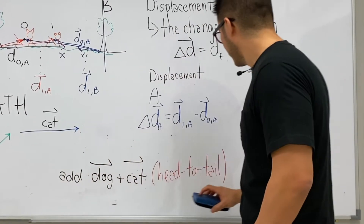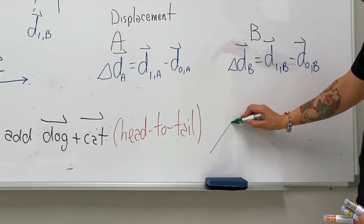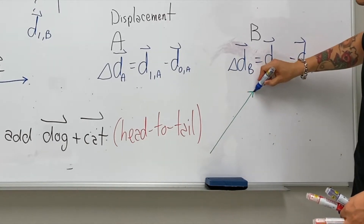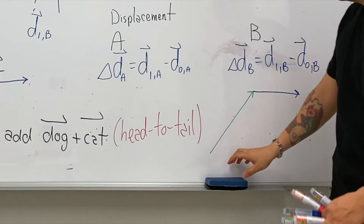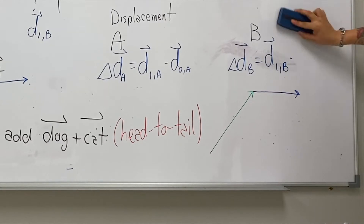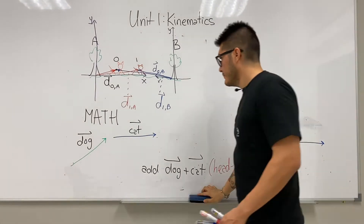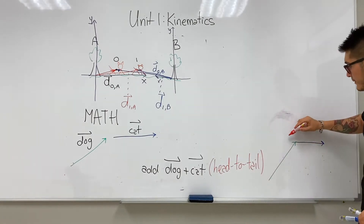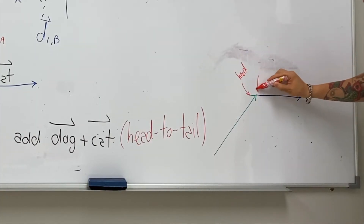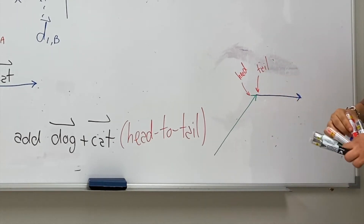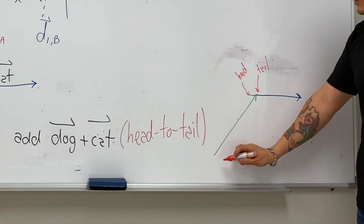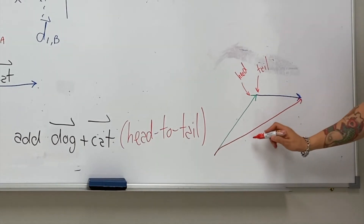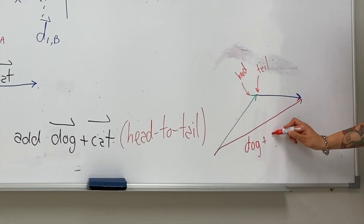Let's draw two vectors and attach them head to tail. We can move them such that the head of one vector connects to the tail of the second vector. When we do this, the resultant or the sum goes from the tail of the first — which is the dog — to the head of the second. So this is known as dog plus cat.